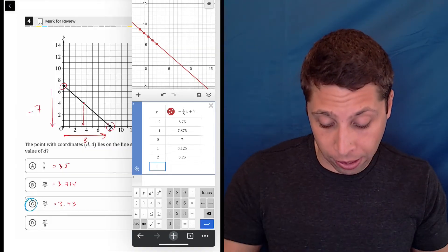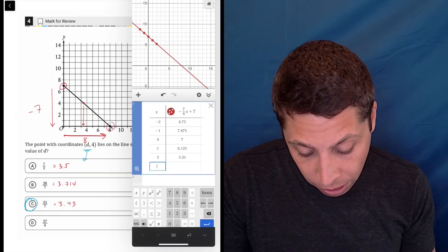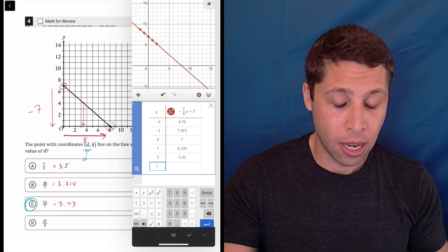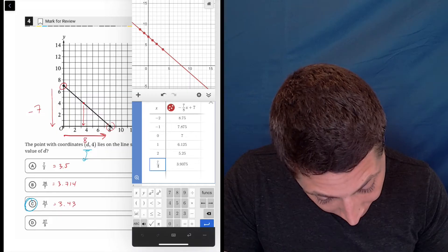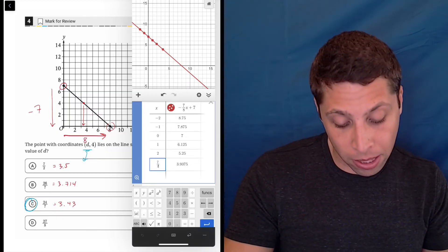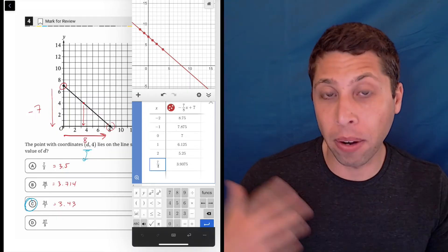And at this point, again if I didn't know the answer I could just try these right, because these are supposed to be the x coordinates. So I could just try one out. So I could do seven halves, seven divided by two, right?